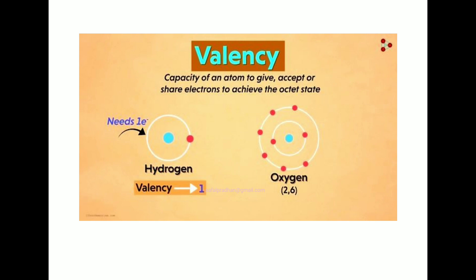One more thing you need to understand is valency. Atoms achieve an octet — that is, 8 electrons in the outermost shell — to become stable. Excluding hydrogen and helium, all atoms try to achieve an octet.